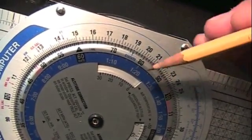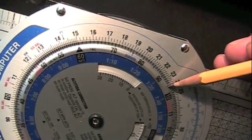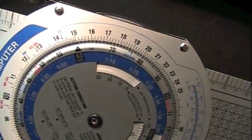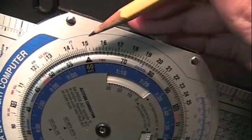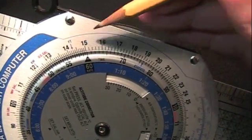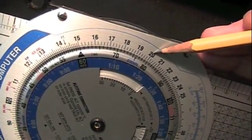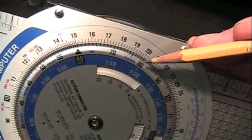Time is indicated in hours on the inner scale of the disk and minutes on the outer scale of the disk. At a rate of 150 knots, a 200 nautical mile distance will be traveled in 80 minutes or 1 hour and 20 minutes.